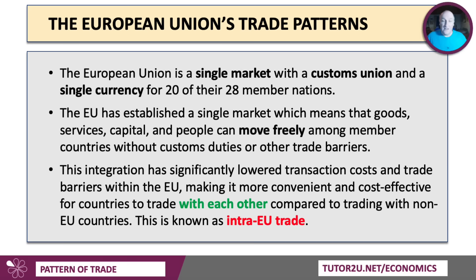The European Union is a huge single market with a customs union and a single currency for 20 of its member nations. The single market is a third stage of economic integration featuring four freedoms: freedom of movement of goods and services, labour, and capital. That deep integration and creation of the single market has brought down transaction costs and trade barriers within the EU, making it much more convenient and cost-effective for countries to trade with each other — known as intra-EU trade.